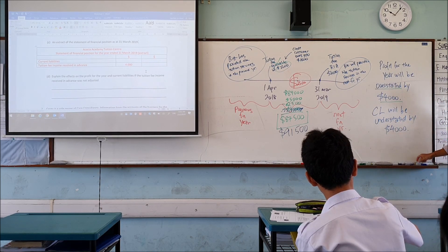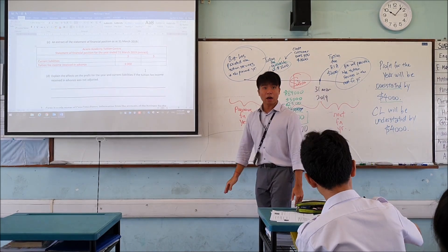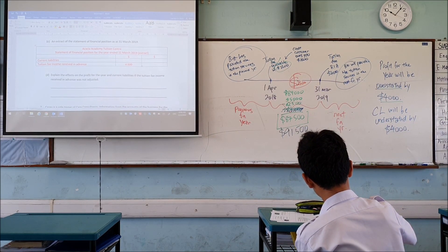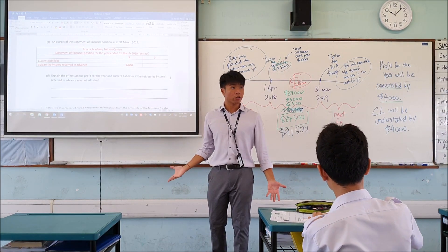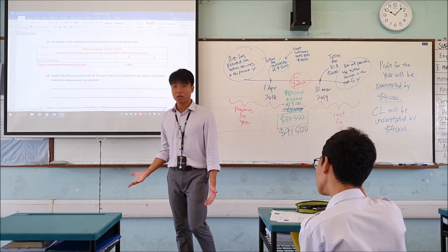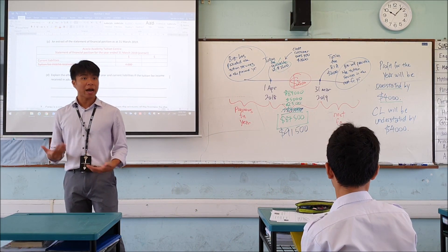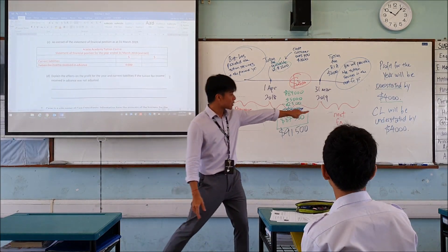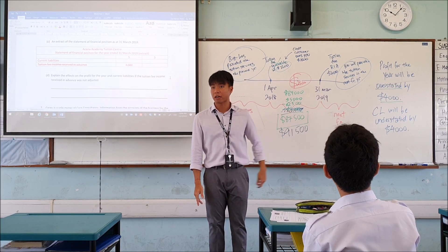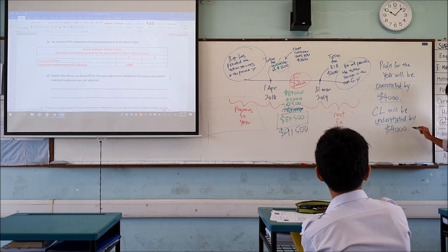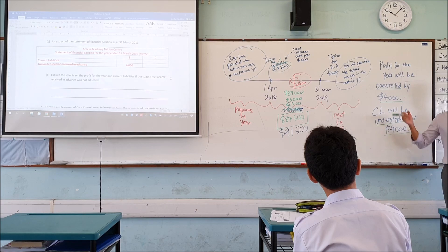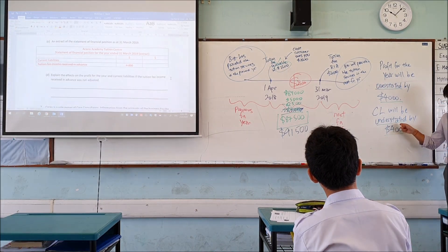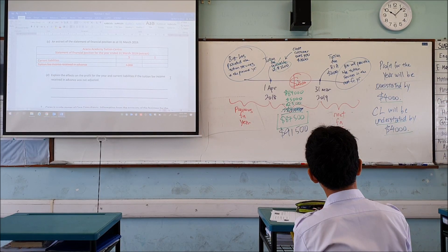If you never adjust, the received in advance account will not appear in your statement of financial position. It should be there but you never create it, so $4,000 is missing — your current liabilities are understated by $4,000. Remember: the value is whatever the question tells you. It's the effect — overstated or understated — that you need to understand.